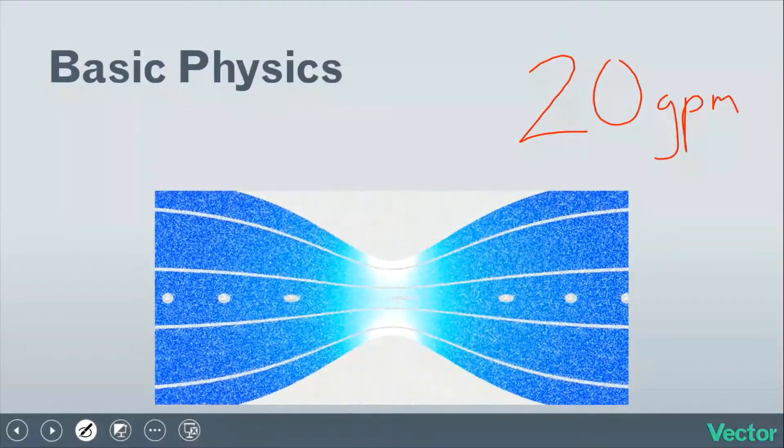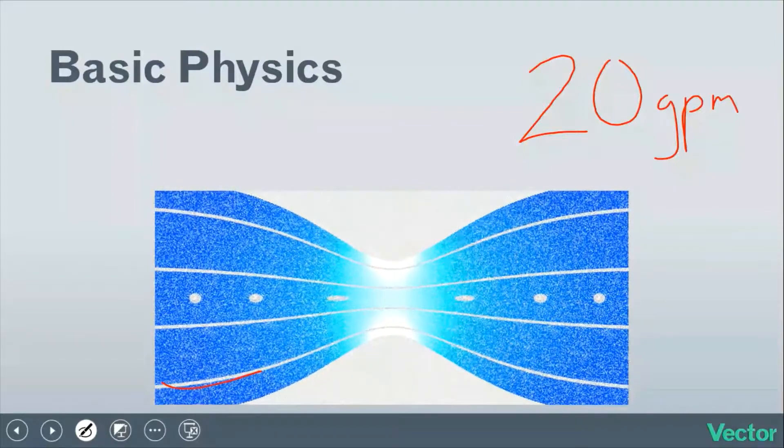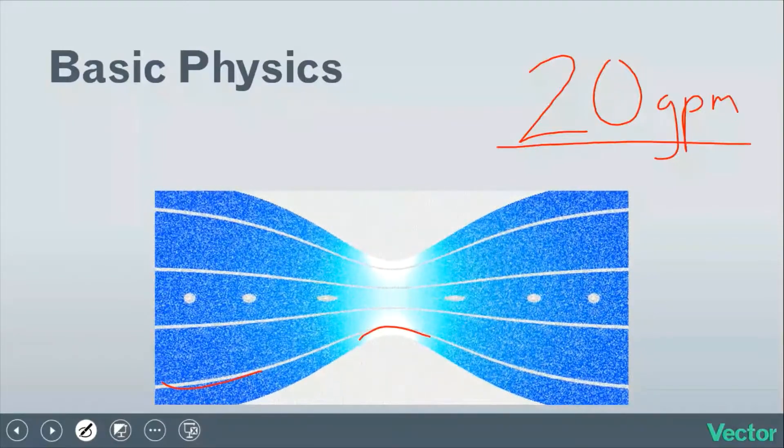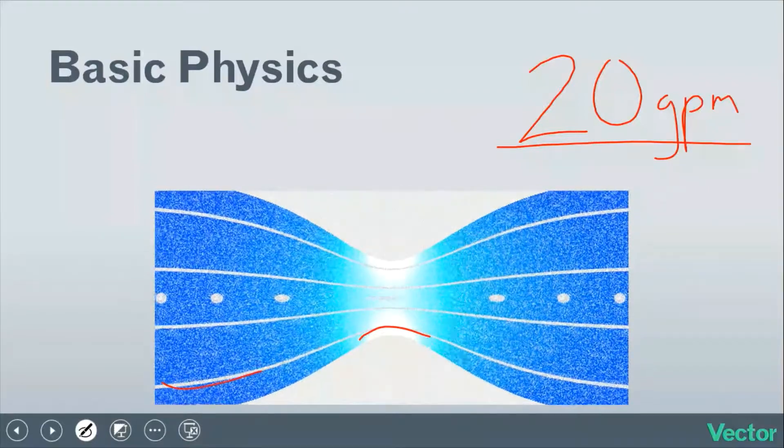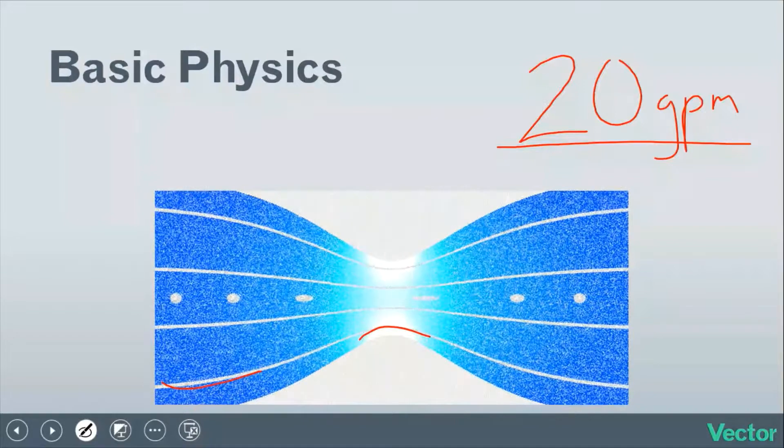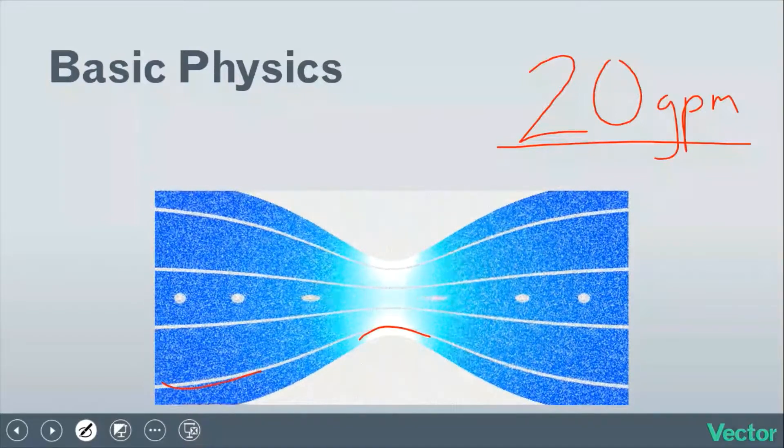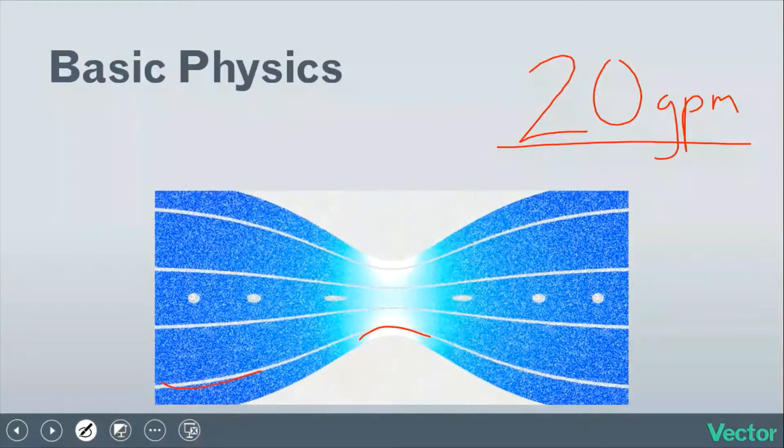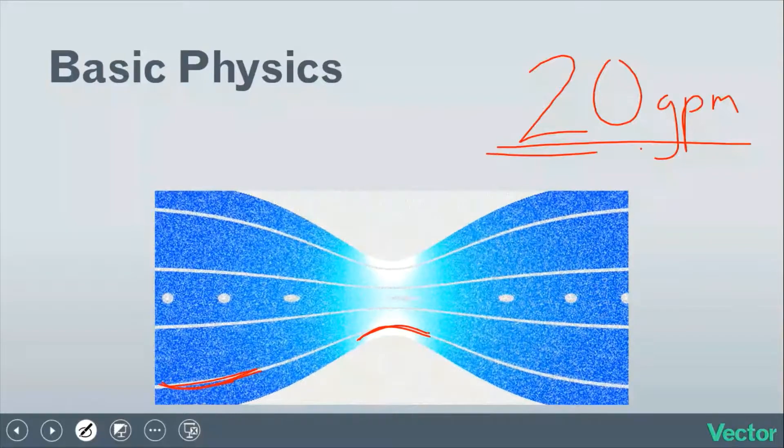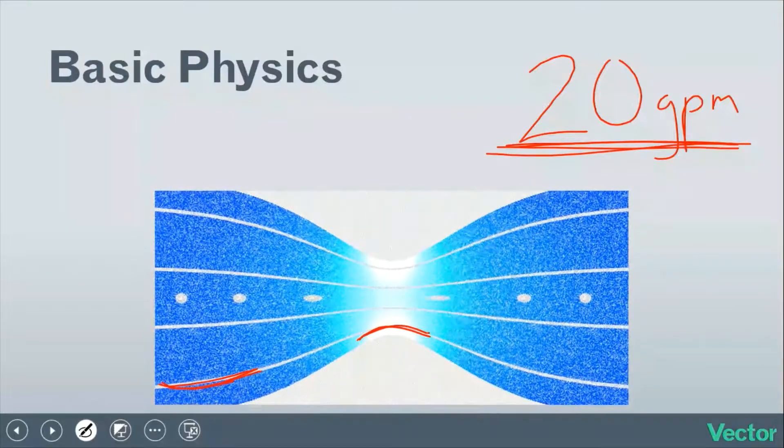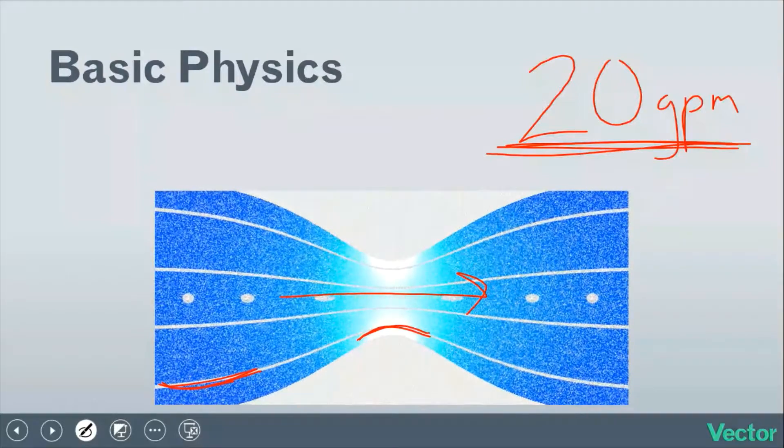We need to move the same amount of fluid in the larger portion through the narrower portion while maintaining that 20 gallons per minute. We can't change the flow rate. If we assume this fluid is incompressible - in other words, we can't pack it into a smaller space, the density can't change - then the only way to move the same amount of fluid through the narrower portion at 20 gallons per minute is to speed it up. The fluid has to speed up to obey those laws of physics.